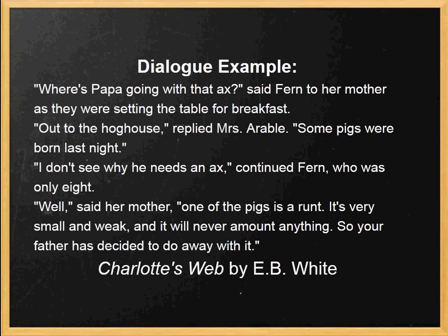An example is from Charlotte's Web by E.B. White. It starts with Fern asking her mother: 'Where's Papa going with that axe?' said Fern as they were setting the table for breakfast. 'Out to the hog house,' replied Mrs. Arable. 'Some pigs were born last night.' 'I don't see why he needs an axe,' continued Fern, who was only eight. 'Well,' said her mother, 'one of the pigs is a runt. It's very small and weak, and it will never amount to anything. So your father has decided to do away with it.' This conversation gives us information about the plot, introduces characters — Fern, her mother Mrs. Arable, and her father — tells us Fern is only eight, and that they live on a farm with pigs.